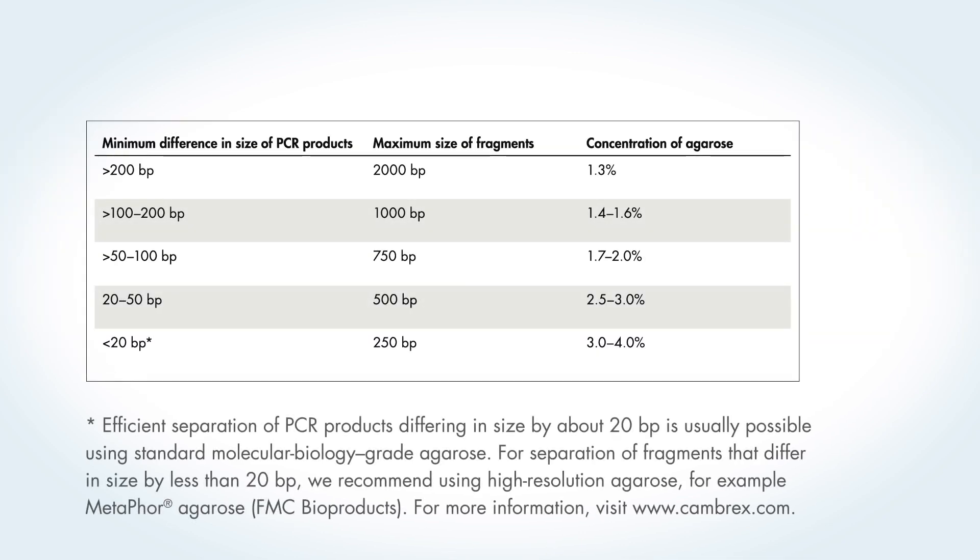The optimal percentage of agarose gel depends on the overall size of the products generated, and it can be adjusted for resolving small fragments, for example multiplex PCR products, or large fragments. As a guide, the table shows that the smaller the fragments, the higher the percentage of agarose. For optimal results, we recommend using 1x TAE buffer for preparation and running the gel.